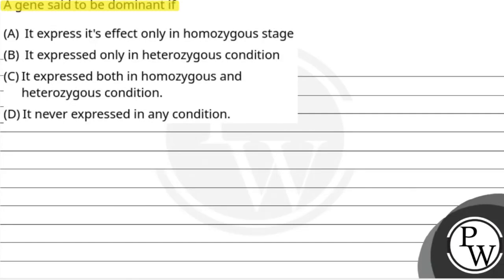The question says a gene is said to be dominant if: it expresses its effect only in homozygous stage, it expressed only in heterozygous condition, it expressed both in homozygous and heterozygous condition, or it never expressed in any condition.